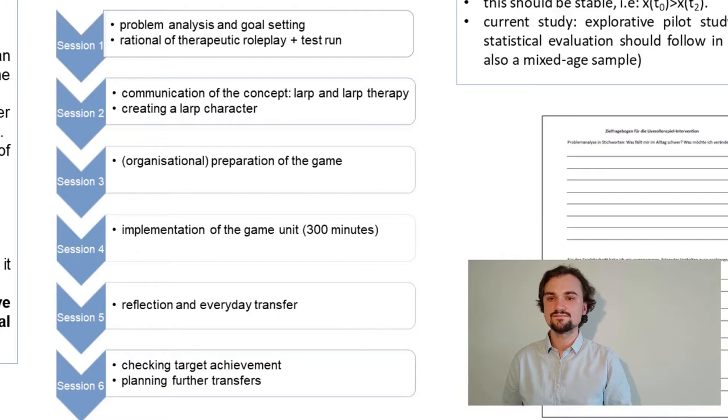Now in session one it all begins with a problem analysis and the goal setting for each individual participant. That means we are talking about the situations in daily life which are difficult for the participants where they say I want to change this, I want new behavior, I want to train new behavior to master these situations in a better way. And we are explaining the rationale of therapeutic role-play and having a little test run. This has nothing to do with fantasy role-playing at the beginning but this is just classic CBT role-playing.